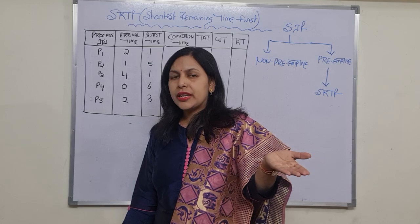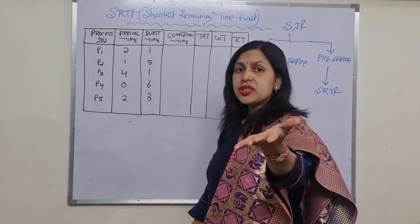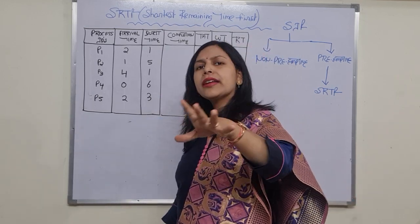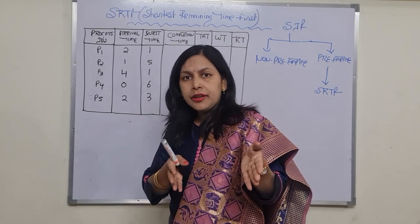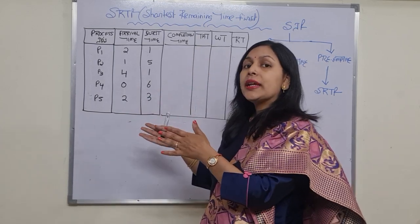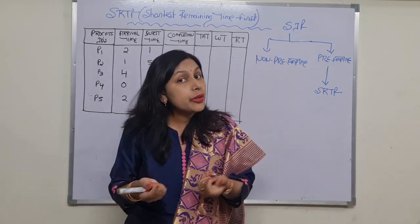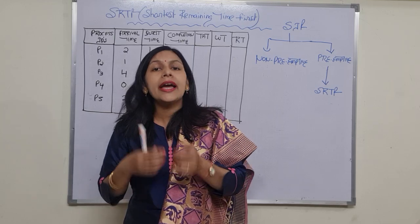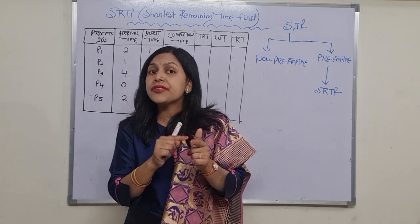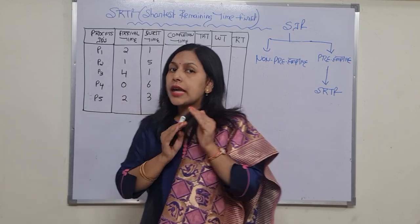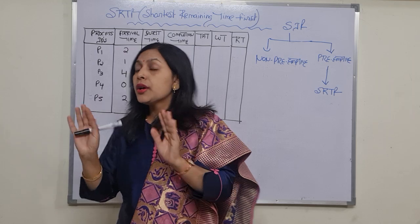In the previous video lectures I solved two to three numericals — you can check those previous links. All of those come under the non-preemptive category. But in today's video I would tell you how to solve the preemptive problems of SJF. The preemptive version of Shortest Job First is called SRTF. Note that SRTF means Shortest Remaining Time First, and it comes under the preemptive version of SJF.